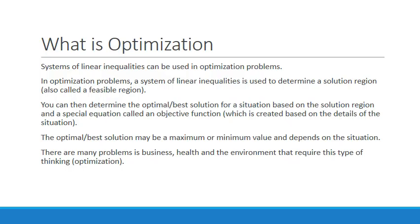Today we're going to look at something called optimization. What is optimization? Systems of linear inequalities can be used in optimization problems. In optimization problems, a system of linear inequalities is used to determine a solution region, also called a feasible region. The optimal or best solution may be a maximum or minimum value and depends on the situation. There are many problems in business, health, and the environment that require this type of thinking.